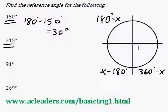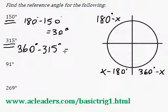315, that's on the fourth quadrant, so I'm going to use this formula. 360 degrees minus 315, 45 degrees. That's the reference angle of 315 degrees.